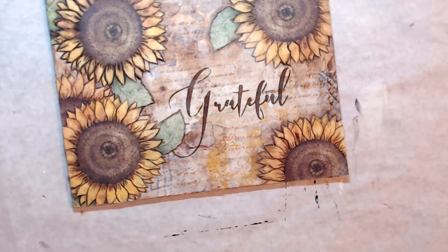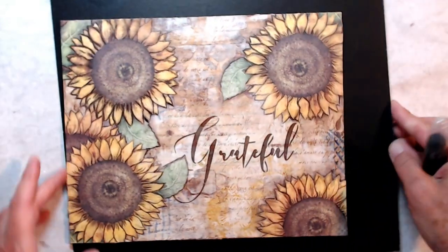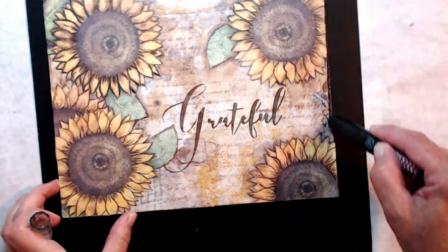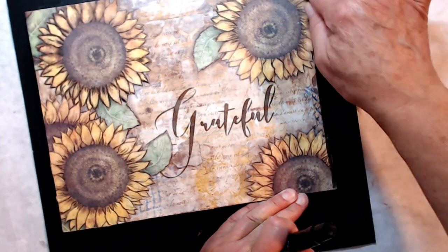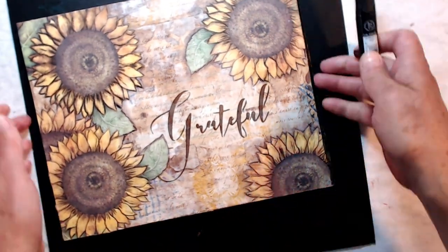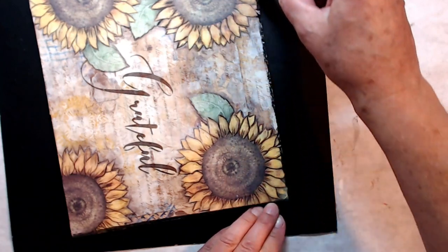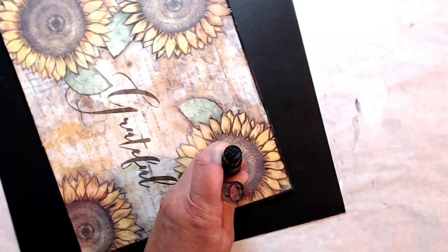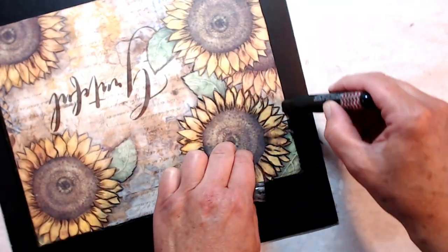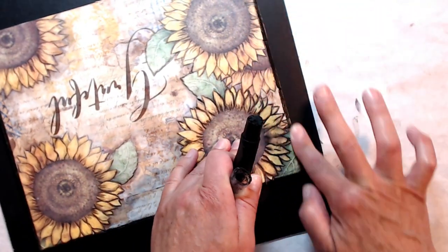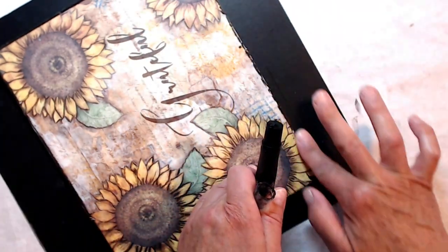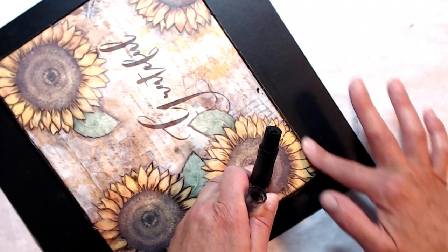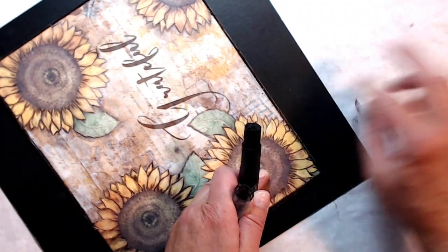Here's my black marabou art crayon. I'm going to go around those edges to give it a frame and see what else we need to do. It's all coming together. I really really enjoyed the piece.